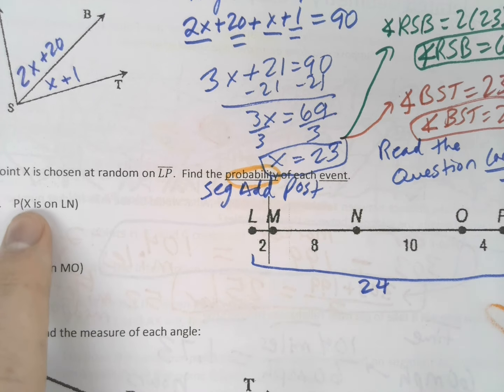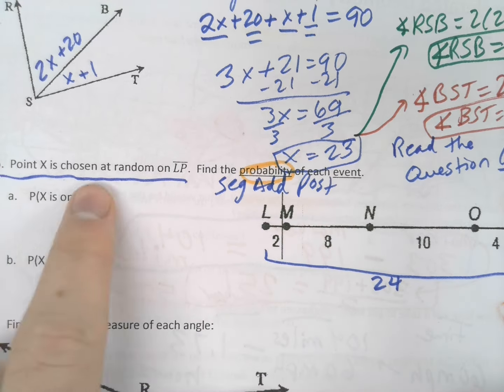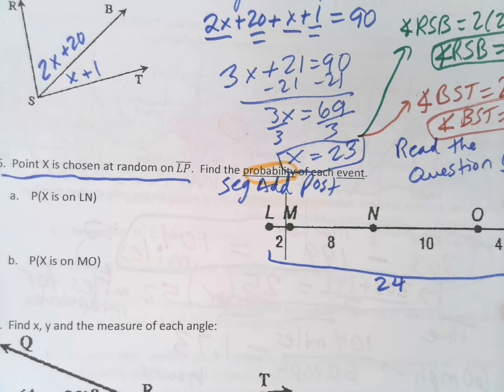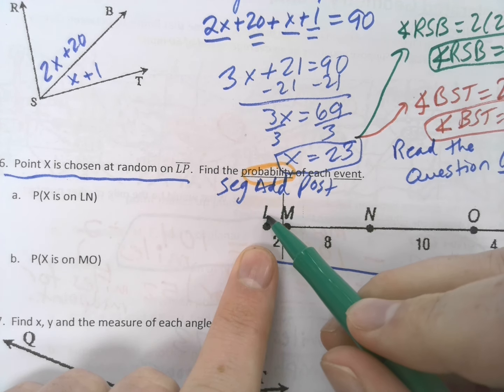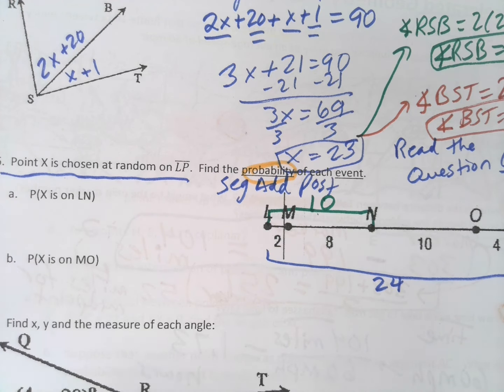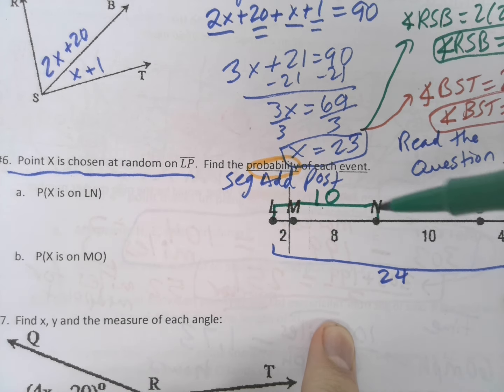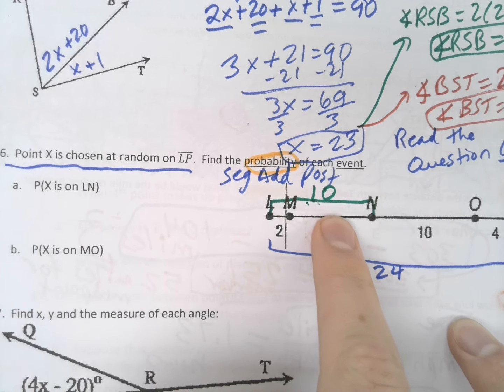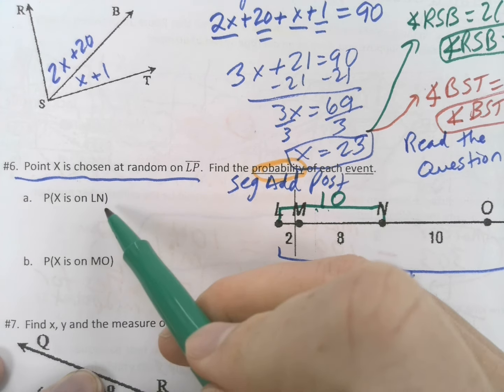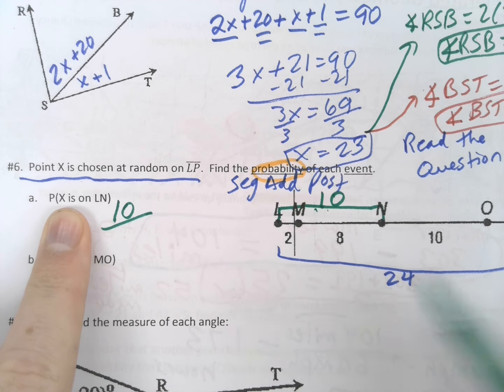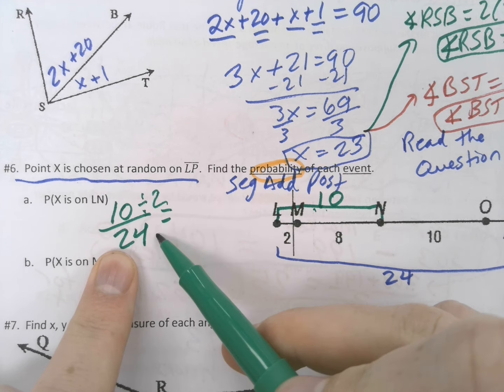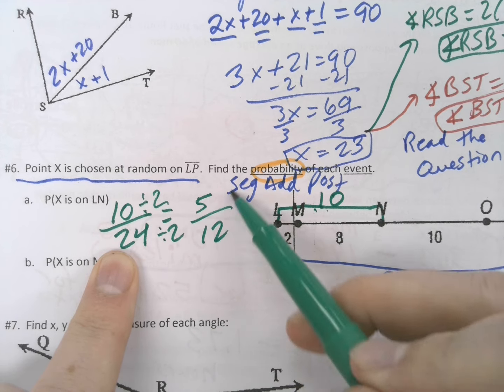So, now, if the probability of finding X is just a random point, point X is on LN. So, Ln, this stretch right here, from here to here, 2 plus 8, that is 10. What are the chances that a point is dropped? We drop a point, boom. What's the chances that it lands here, somewhere in here? Well, that's a 10 out of 24 chance. We're talking the probability of the event happening out of the total possible spaces. So, 10 out of 24, and we know that reduces down to 5 out of 12.